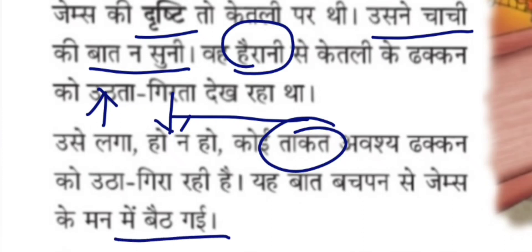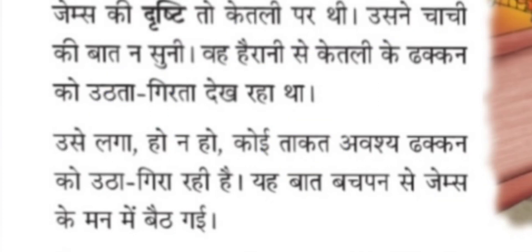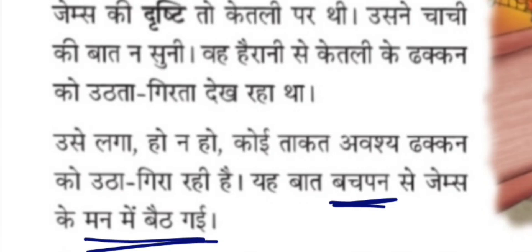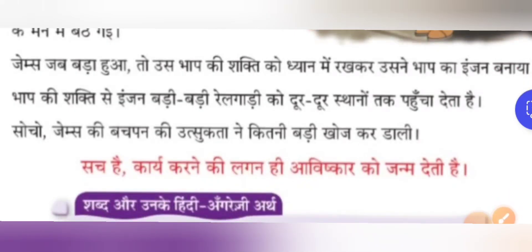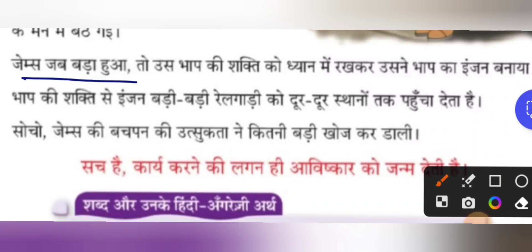Ye baat bachpen mein James ke mann mein batk gayi — this thought went deeply into James's mind in his childhood. Bachpen is childhood. When James grew up, keeping the power of steam in his mind — us baap ki shakti ko dhyan mein rakh ke usne bhaap ka engine banaya — he invented the steam engine. He was having in his thought that steam has some power to move the lid up and down, and from that he was able to invent the steam engine. The steam engine concept uses the energy in the steam.